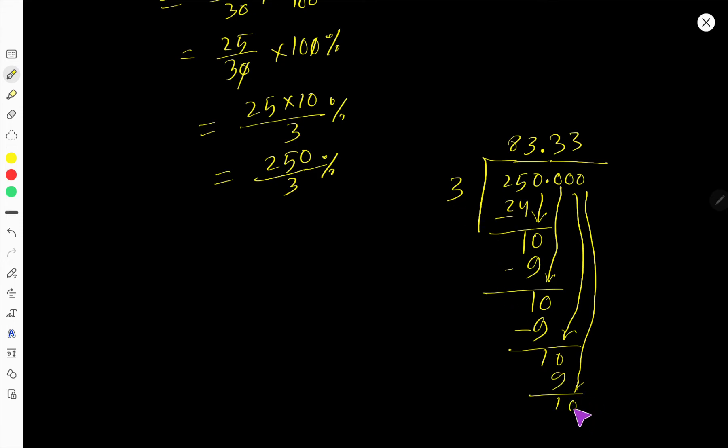3 goes into 10 how many? Three times. Actually this process will continue if you take zero here. There is no ending step. That is why we'll round. Round to, is it, after decimal, 3.33 if I round. So 250 divided by 3 is 83.33, 83 point 33 percent.